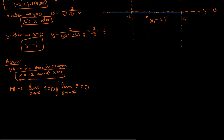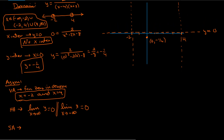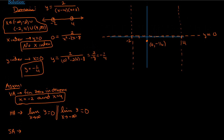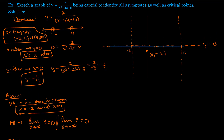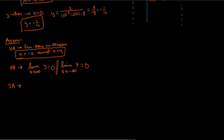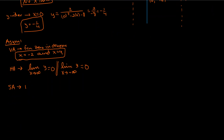The third type to consider is slant asymptotes. Slant asymptotes only occur when the exponent in the numerator is 1 degree higher than in the denominator. In this case the higher exponent is in the denominator, so there are no slant asymptotes.